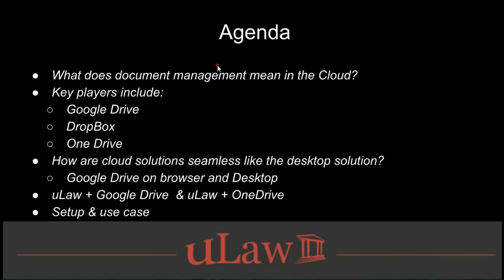When we talk about key players in this industry, we consider the top three or four: Google Drive, Dropbox, OneDrive, and Box. We'll look at comparisons of their pricing plans, advantages and disadvantages, and how ULAW is integrated with both Google Drive and OneDrive. We'll show use cases from both a matter and accounting perspective.